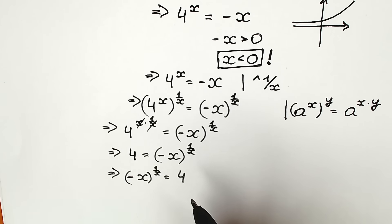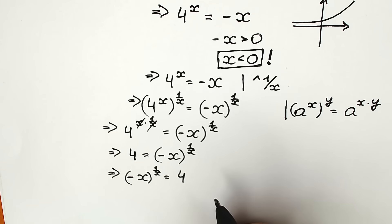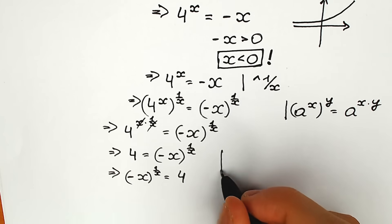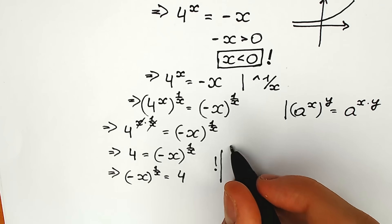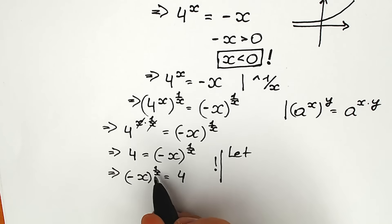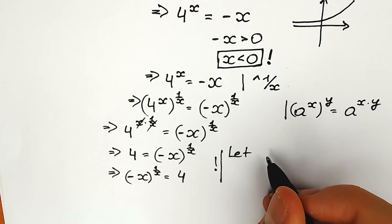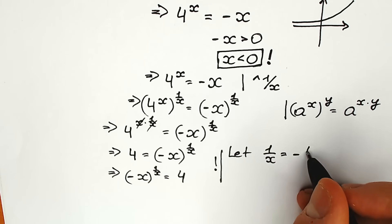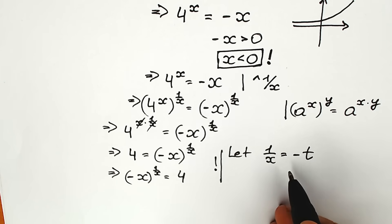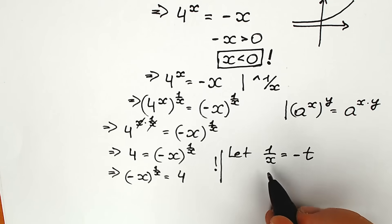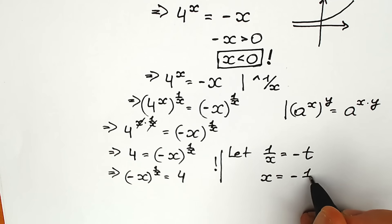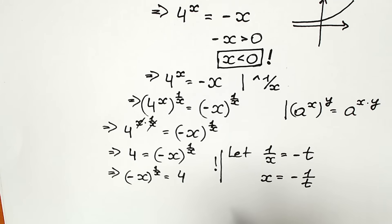There are several approaches to solve this. I'm going to use substitution. Let 1 over x equal minus t, so x equals minus 1 over t.